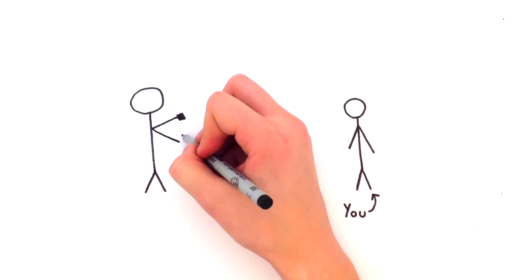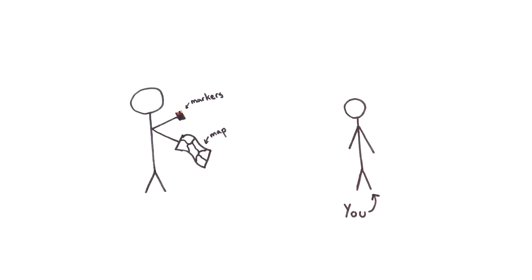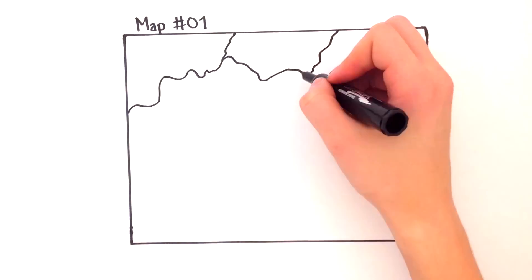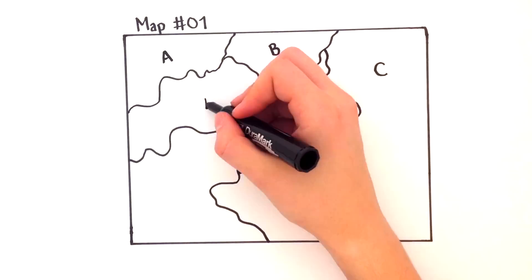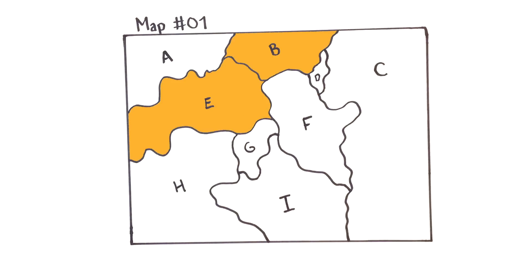Let's suppose you started working for a map making company and you're given the unfortunate task of coloring in the blank maps. Your aim is to color in the country such that no two adjacent countries share the same color, otherwise someone reading that map wouldn't be able to distinguish between those two countries.